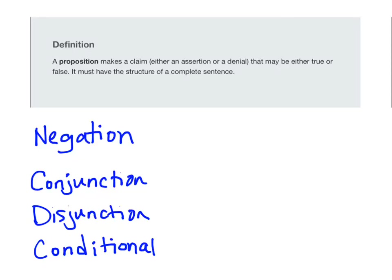In your reading, you learned that a proposition is a complete sentence that makes a claim that's either true or false. One of the things that's helpful in making truth tables for propositions is to look at the number of propositions and use that as a clue to decide how many rows the truth table will have. So when you make a truth table for P, there are really only two options — it's true or false.